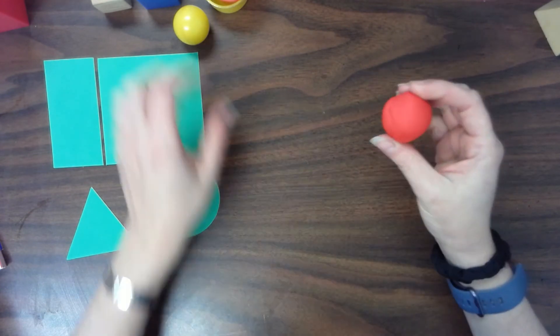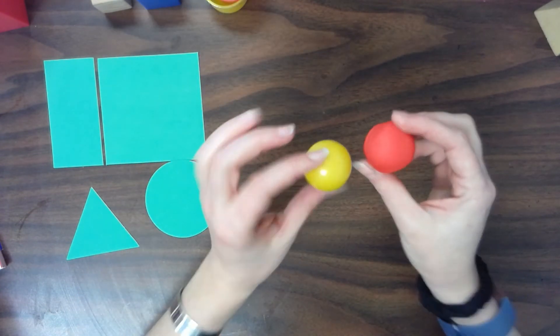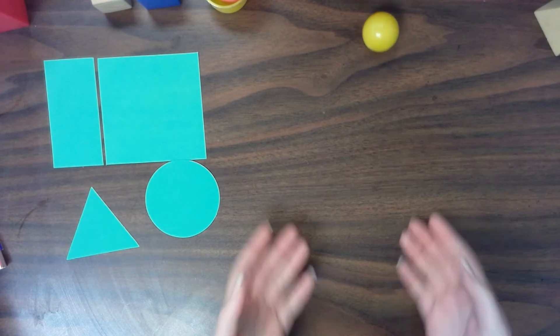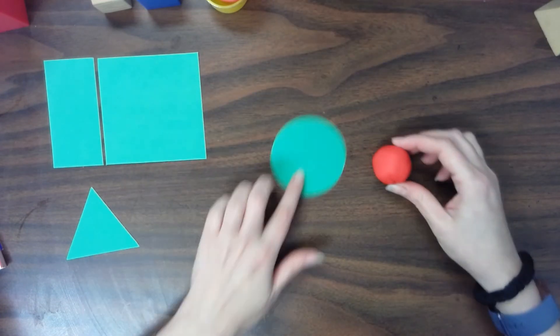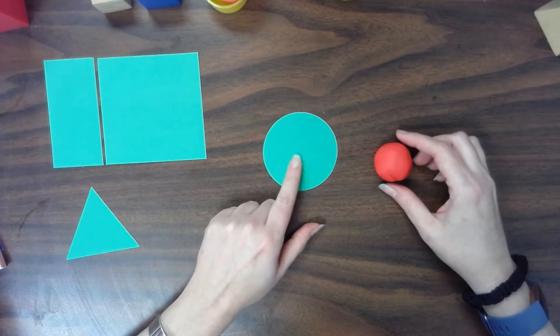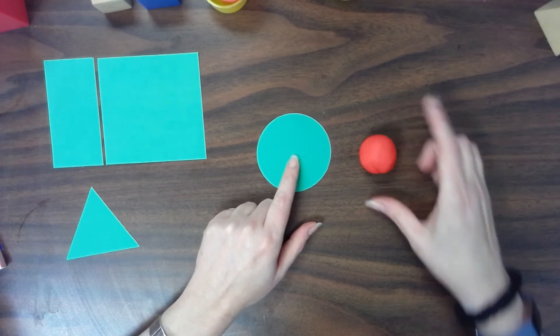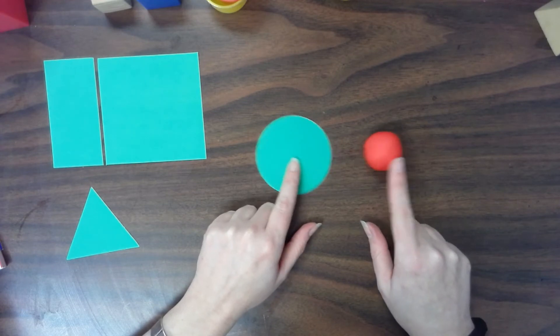And see if you can make a sphere. That looks like a pretty good sphere to me. See if they roll. Yep. They can both roll. Alright. There's my sphere. So a circle, 2D shape. A sphere is my 3D shape.